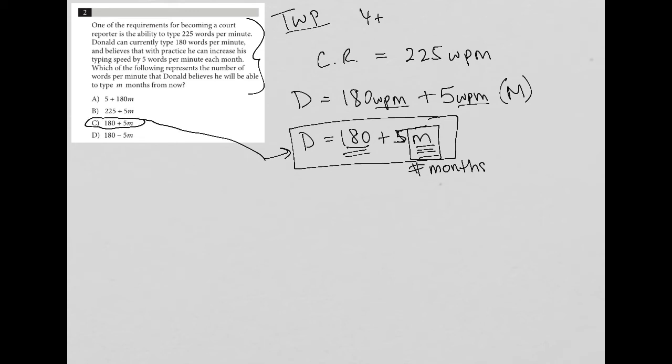Hopefully you know what I mean by that. If not, check out some other videos I have. But in essence, with plugging your own numbers, we make up a number for our variable. So let's say M is 5, meaning five months from now.